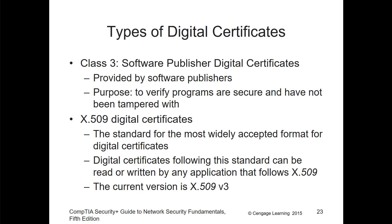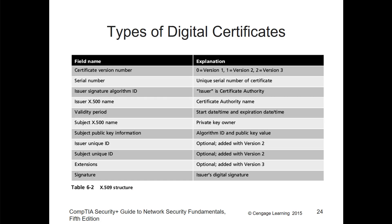Class 3 certificates are for software publishers — typically provided to verify the program and ensure it wasn't modified. We also have the X.509 digital certificate, which is the standard for the most widely accepted format of digital certificates. Currently on version 3, these certificates follow standards readable and writable by any compliant application. Fields include version numbers, serial numbers, issuers, validation period, subject name, issuer's unique ID, subject's unique ID, extensions, and signatures.